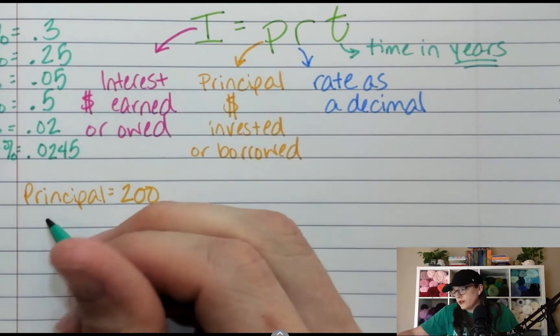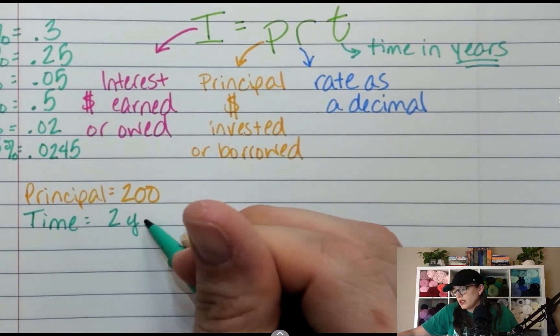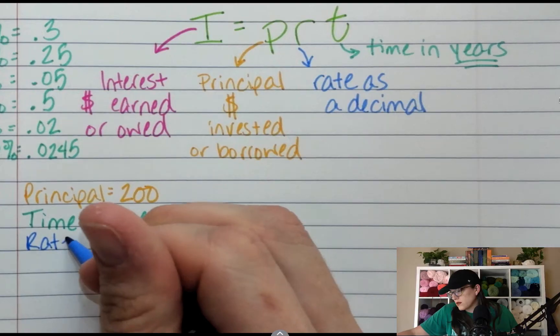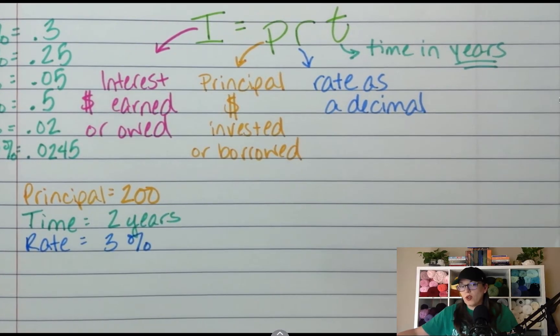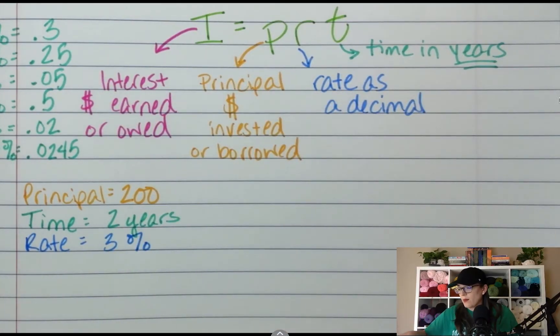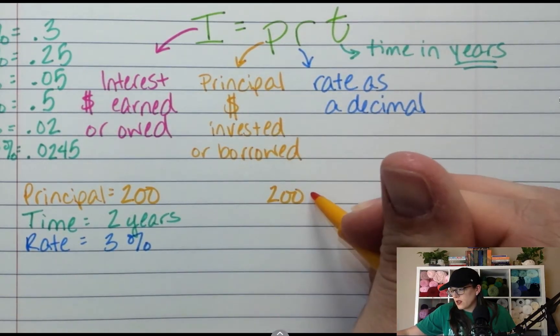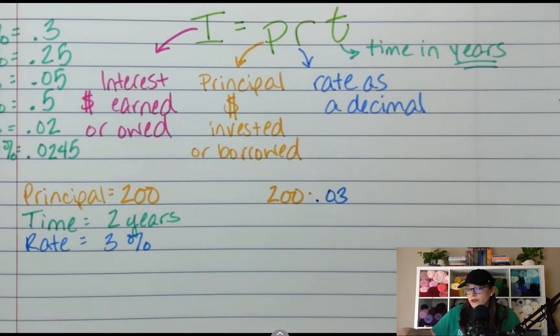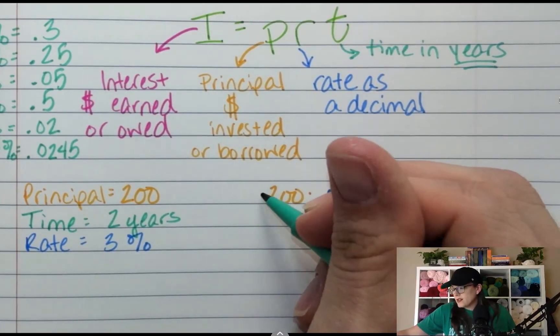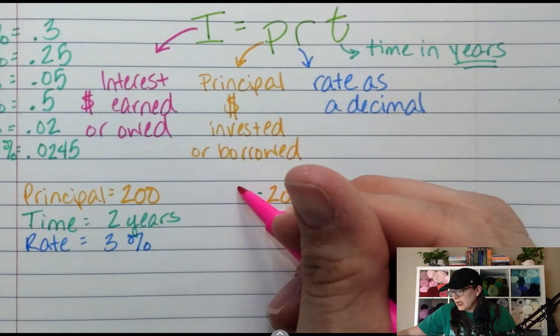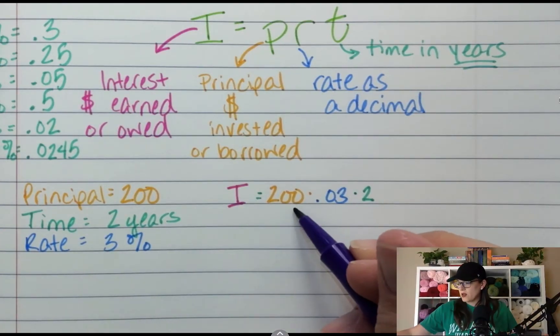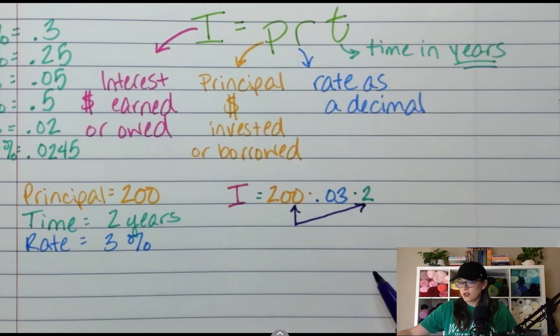So I'm going to keep it in the bank for two years. So time is two years. And my interest rate is 3%. So all I'm going to do is multiply these three numbers like this. So how much is the principal? Principle is 200. How much is the rate as a decimal? It's 0.03. And then how many years? Two. So this is times two. This is going to tell me how much extra money I earned. So because I can multiply in whatever order I want, I'm going to choose to multiply 200 times two first, because I know that is a whole number.